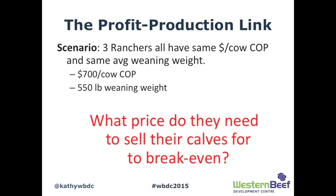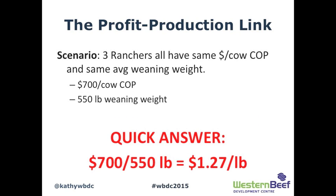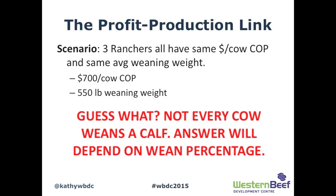Here's another way to explain it. Say three ranchers all have the same cost of production — $700 per cow wintered — and they all tell me their average weaning weight is 550 pounds. What do they need to sell their calves for to break even? Simple math: $700 divided by 550 pounds means they need to sell those calves for $1.27 a pound. But that only works if every cow they wintered actually weaned a calf they could market in the fall, and that tends not to be the case.